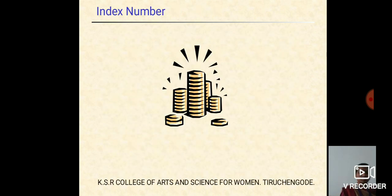Now, see the index numbers. Index numbers are the indicators which reflect the changes over a specified period of time in price of different commodities, productions, sale, cost of living index, etc. The index numbers are statistical methods used to measure the relative changes in the level of variables or group of variables with respect to time, locations, or other characteristics such as income, professions, etc.